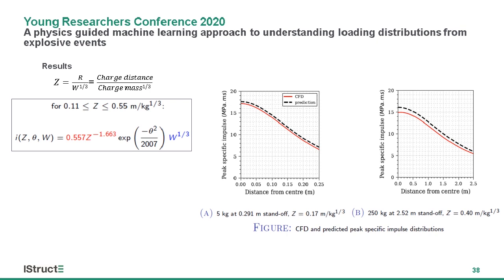To put this into context, the right-hand side shows two validation exercises we performed. The red solid lines indicate the output from the CFD software, and the black dashed line is the prediction from our model. This shows the flexibility of our approach, as we have analyzed two completely different charge masses — one of five kilos and the other of 250 kilos at different distances — with good agreement between both models. The real benefit is the time saving: those CFD models took about six hours each to run, whereas our model took a fraction of a second — something you could do on your phone calculator right now.